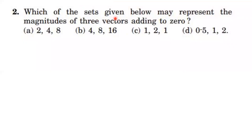Second question: which of the sets given below may represent the magnitudes of three vectors adding to zero? When we add three vectors to get a resultant of zero, let us take any two vectors — first vector A and second vector B. The resultant of A and B must be equal and opposite to the third vector, so the total resultant will be zero.